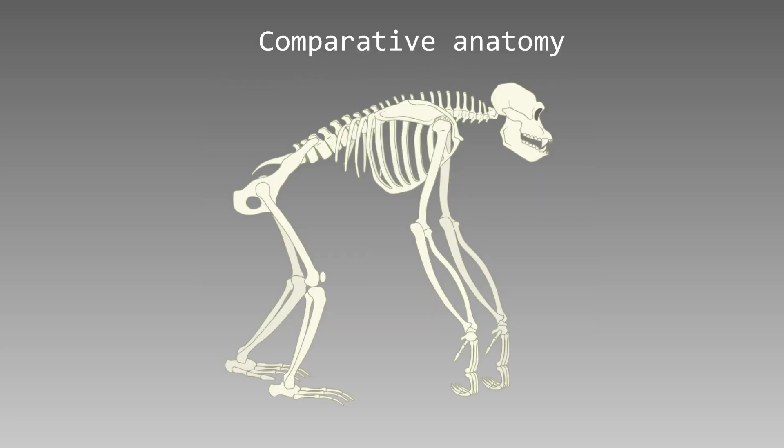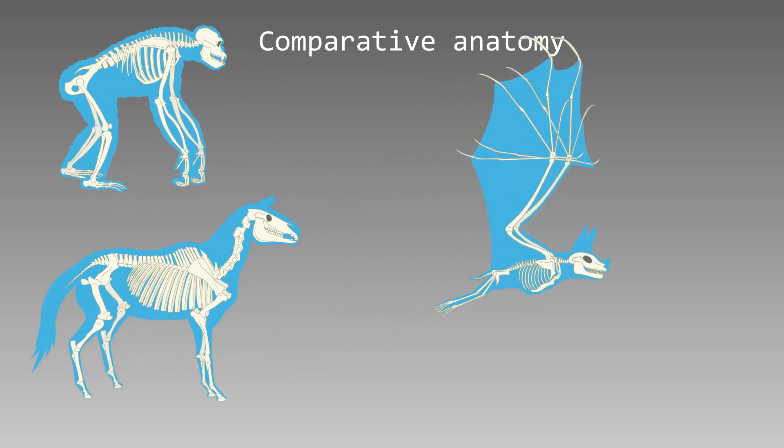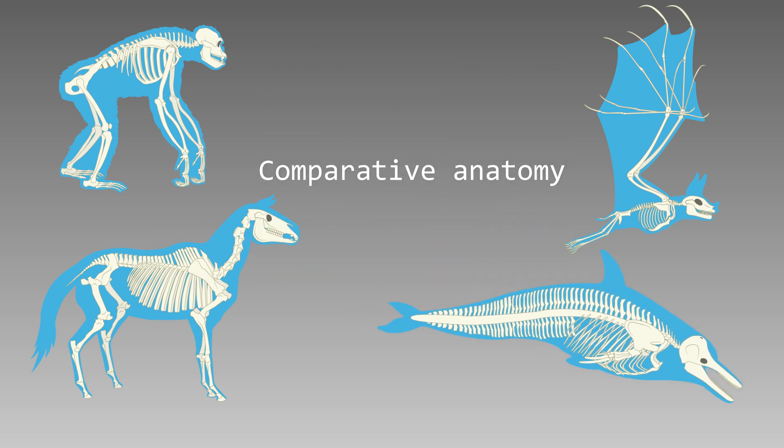Building on this work, comparative anatomy is the comparison of the structures of different animals. These comparisons can tell us a lot about how they are related. For example, chimpanzees, horses, bats and dolphins all have the same basic skeleton, although they live very different lifestyles.